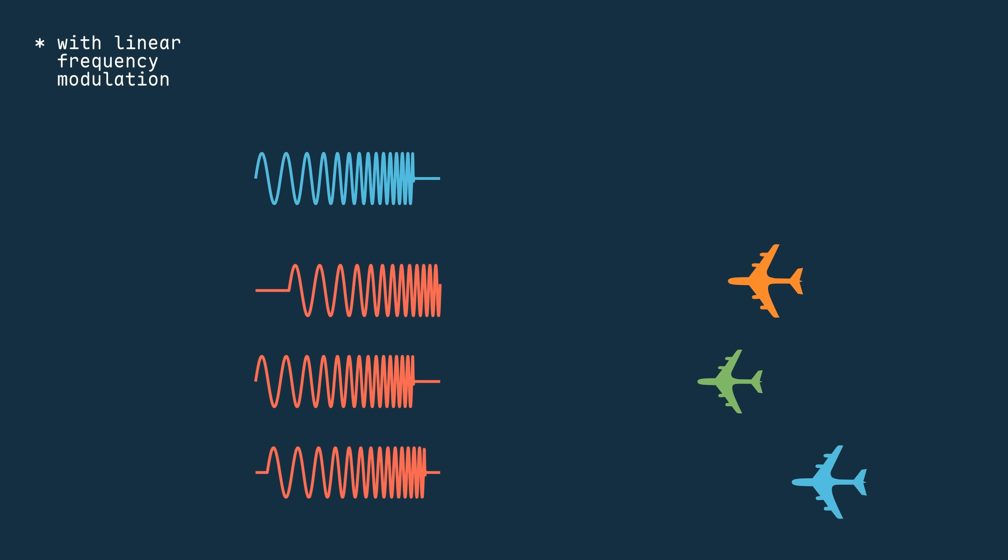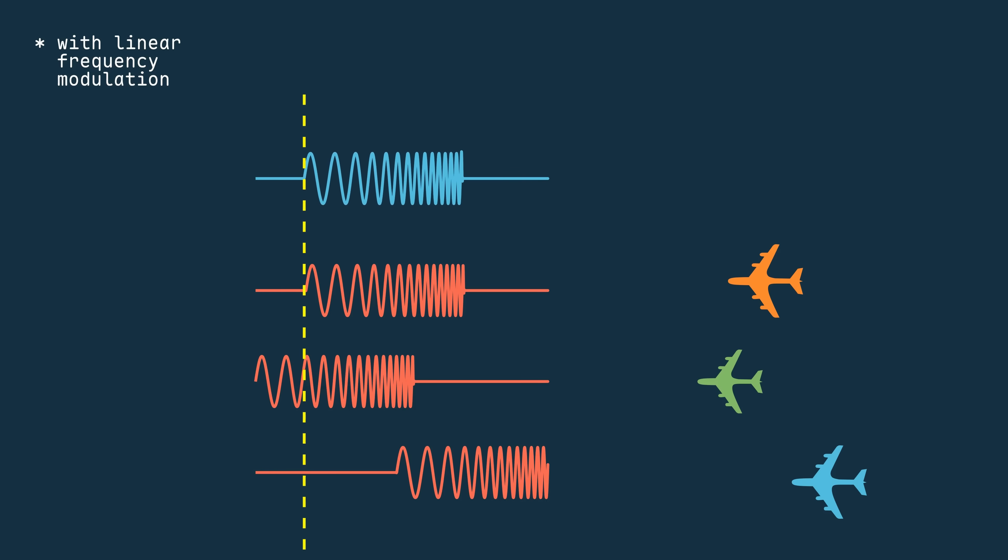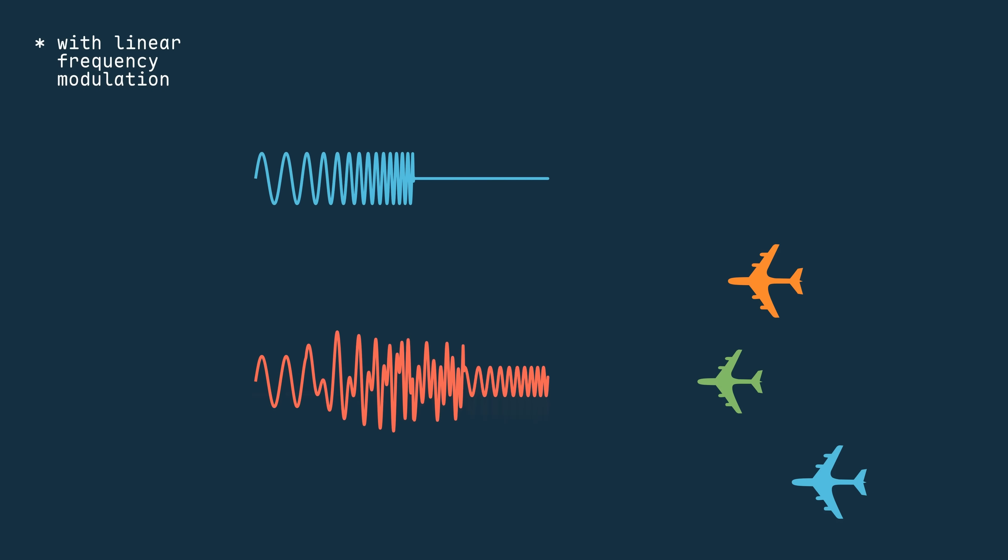And if we have multiple targets, that overlap will happen multiple times. What we'll actually receive is the superposition of all those signals, so it becomes less obvious where the start and end is, even though we have that defined structure.